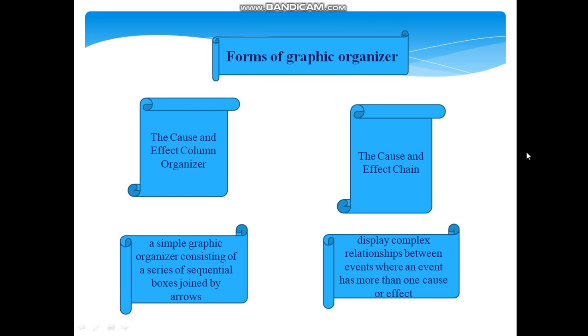The cause and effect column organizer consists of two columns labeled cause and effect respectively. Students can record the cause in the left-hand column and the corresponding effect opposite in the right-hand column. This allows students to quickly see the cause and related effects and can serve as a useful study tool to review material.